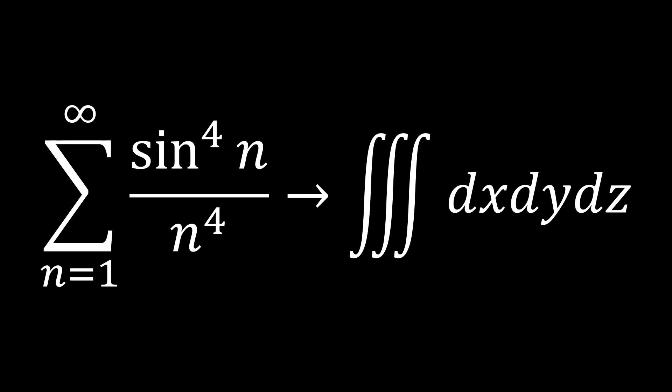Hello guys and welcome to another calculus video. Today is going to be pretty similar to the last one. This time we're going to be taking on the sum from n equals 1 to infinity of sinc to the fourth of n — that's sin to the fourth of n over n to the fourth — and we're going to be doing that by converting it into a triple integral. This problem is going to take us a while, probably a longer video, but I think it's going to be really interesting and fun, so hang in and watch to the end.